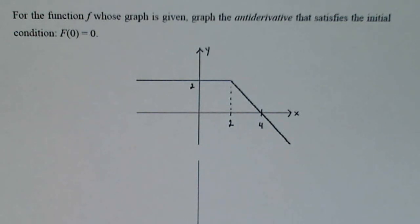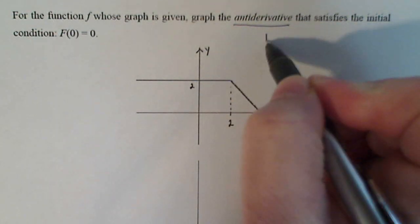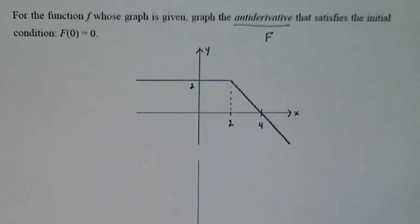Okay, we're going to take this graph right here and it says for the function f whose graph is given, graph the antiderivative. Now the antiderivative is known as capital F, that satisfies the initial condition that capital F of zero equals zero.